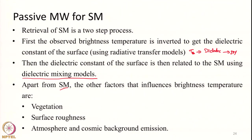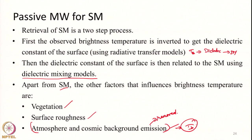Apart from soil moisture, the brightness temperature is also influenced by vegetation, surface roughness, and atmospheric and cosmic background emission. Basically when we get brightness temperature, these atmospheric and cosmic background emission effects will be removed or at least greatly reduced by the data providers. The brightness temperature we get after processing by data providing agencies can be assumed to be free from these effects. But we still have to account for the effects of vegetation and surface roughness when trying to retrieve soil moisture.